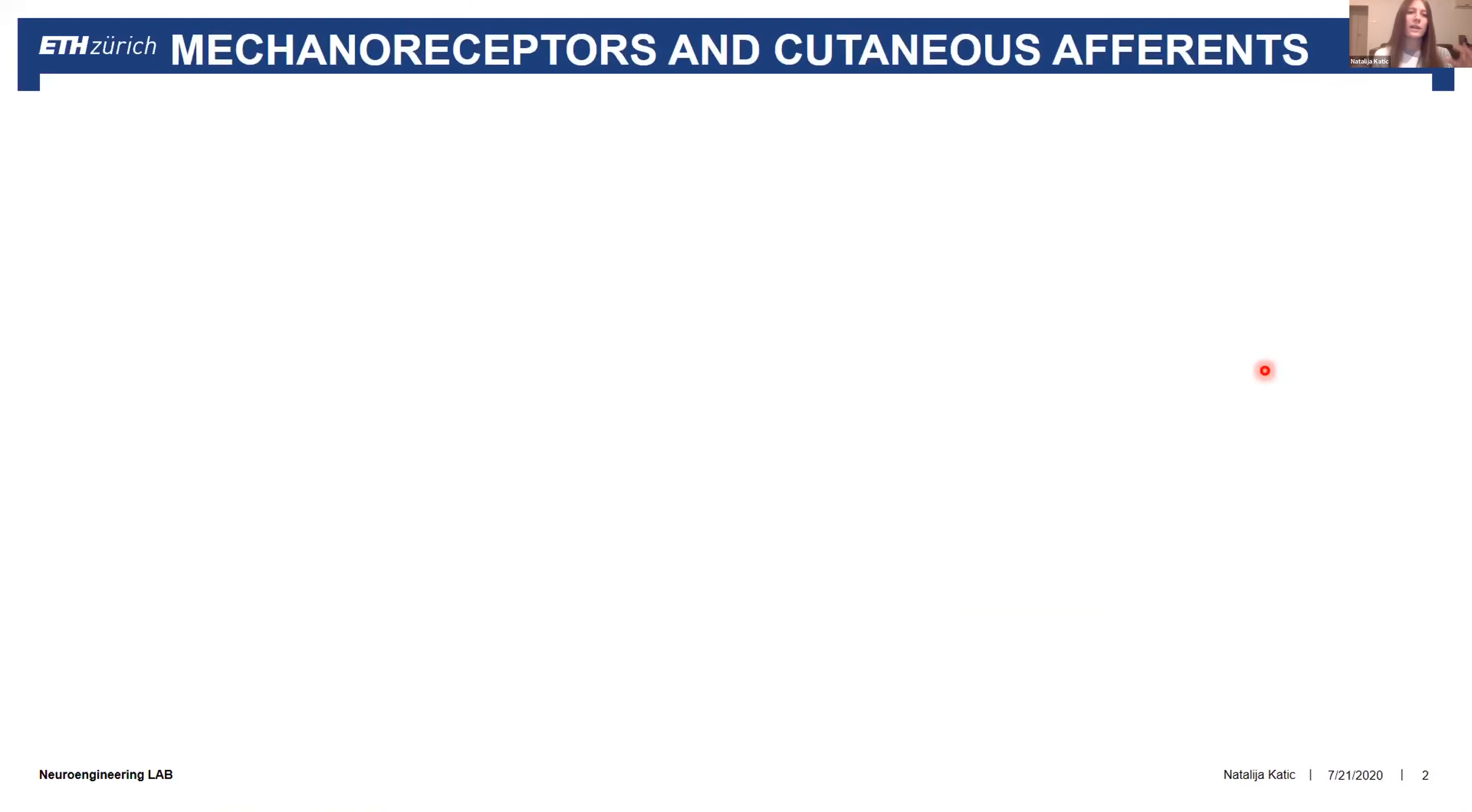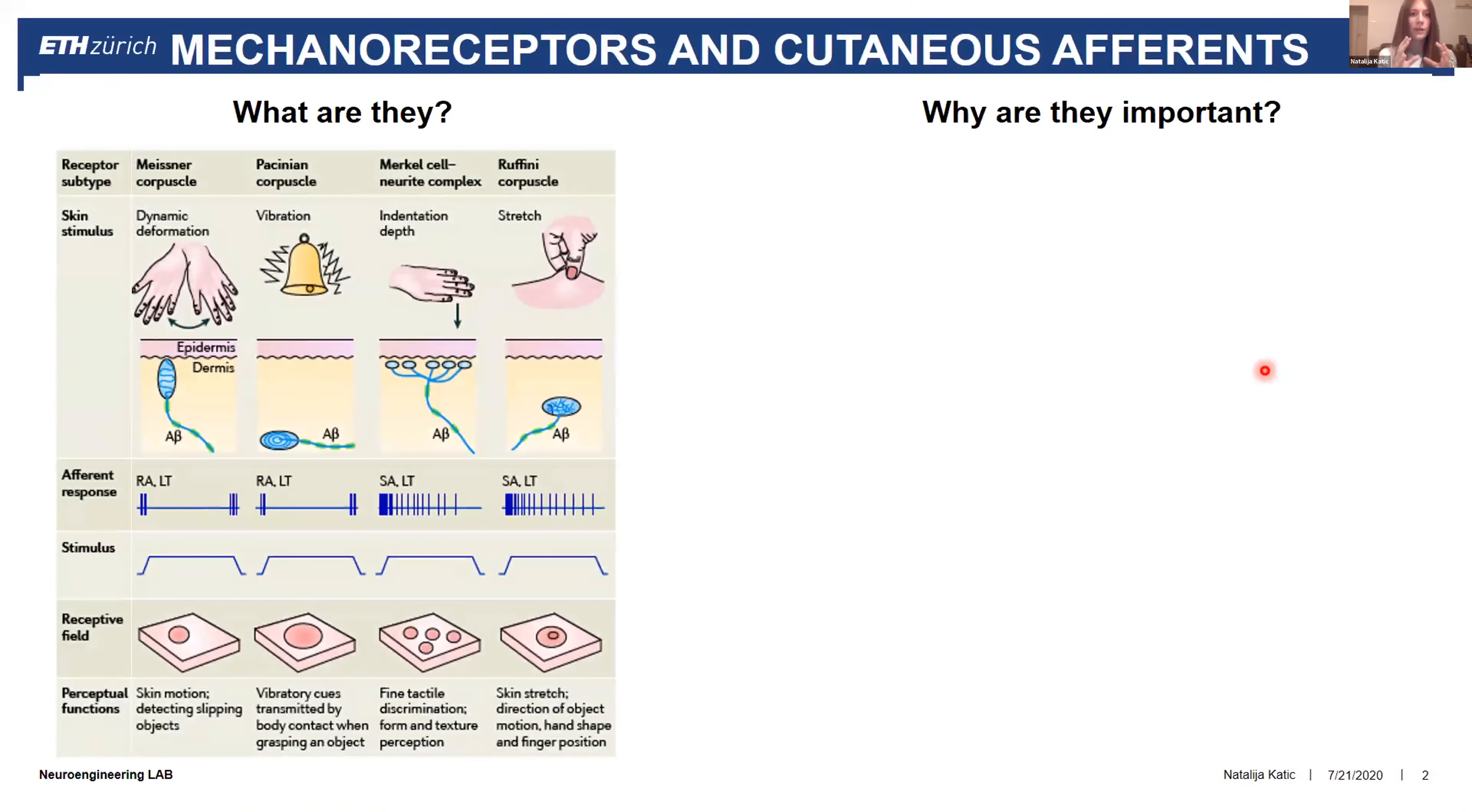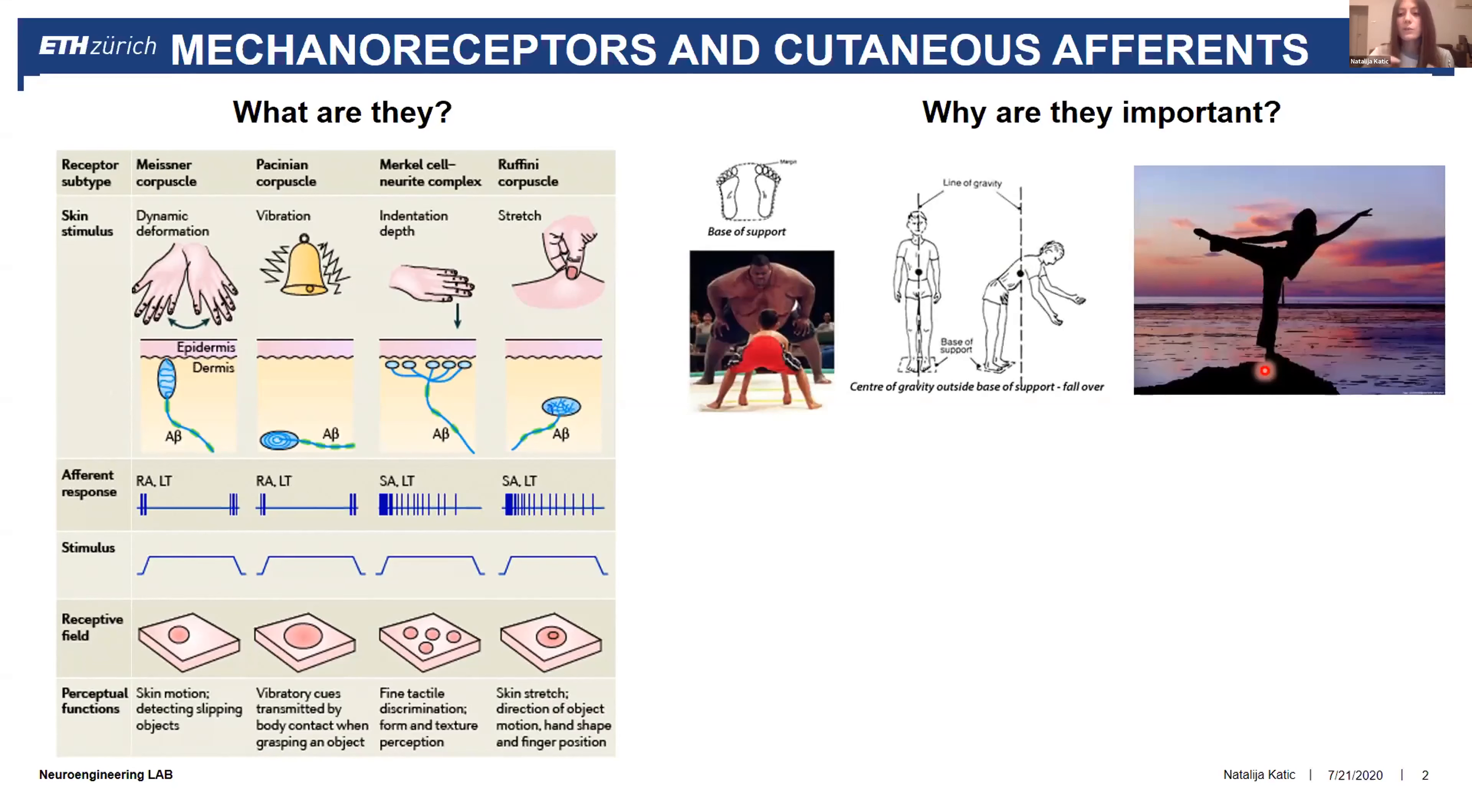First we need to know what mechanoreceptors and cutaneous afferents are and why they are so important, especially in the foot sole. There are four types of mechanoreceptors innervating the glabrous skin of the foot sole. Together, mechanoreceptors with a sensory nerve make a sensory unit called cutaneous afferents. There are four types classified according to how they respond to stimulus and their receptive fields: fast adapting type 1 and 2, and slowly adapting type 1 and 2. All of these classes have unique perceptual function and send tactile and proprioceptive information to the central nervous system, which uses that as input to modulate the response of motor neurons. Their main role is to maintain balance during standing and during gait.